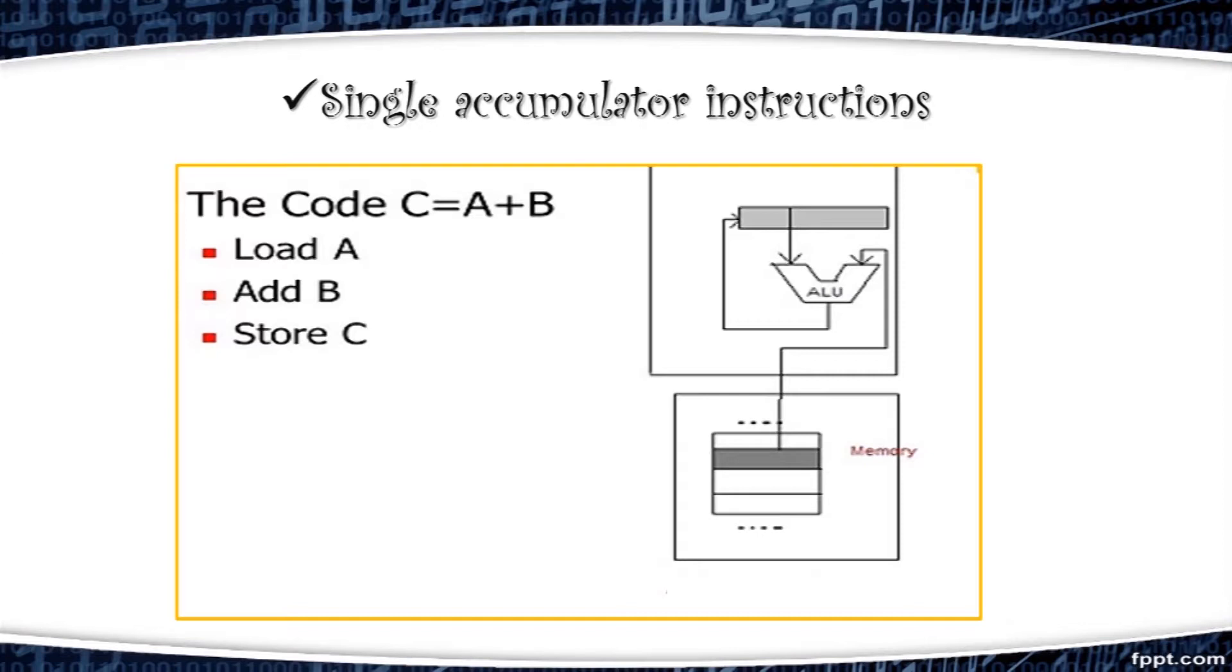For example, an arithmetic addition instruction and the corresponding operation of an assembly language instruction is add AC arrow AC plus MX. Where AC is the accumulator register that have one of the operands. And MX symbolizes the memory word located at address X.